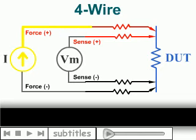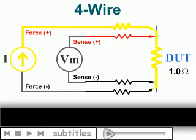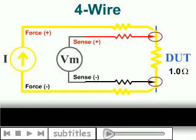In this case, no current flows through the voltmeter or sense leads, so you get a true resistance measurement from the point where the force and sense leads come together.